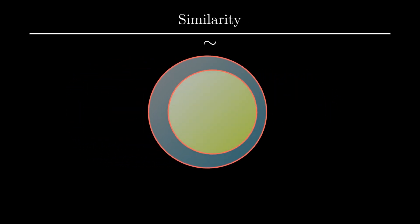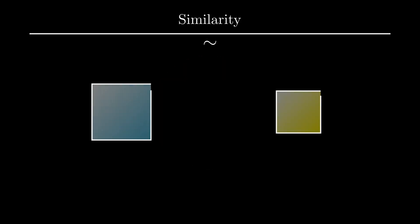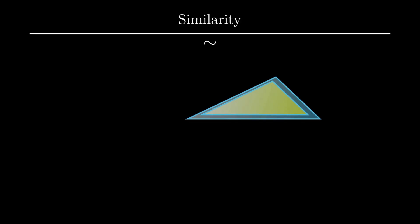While the term similarity refers to the situation where the two given figures have same shape but different size. In simple words, if two figures do not overlap each other perfectly, then they are said to be similar.